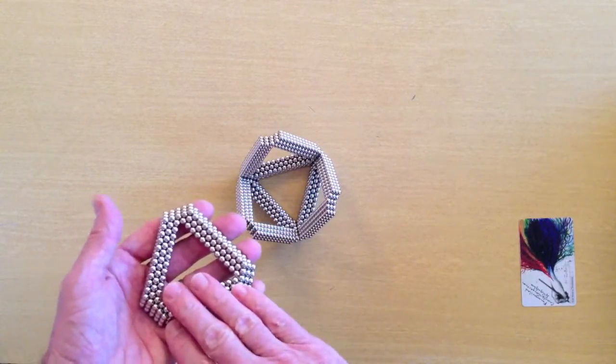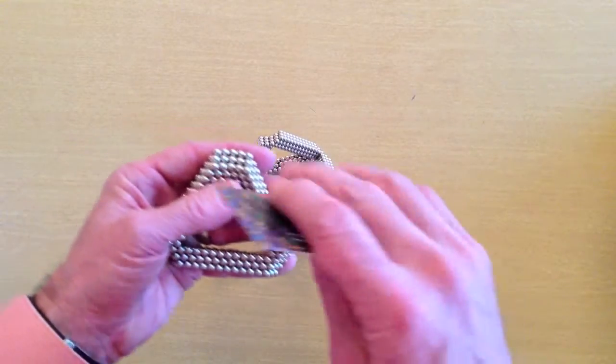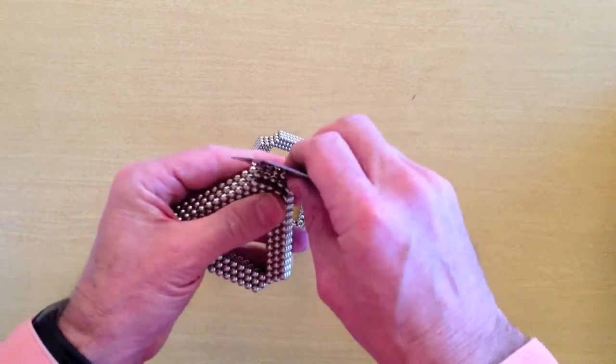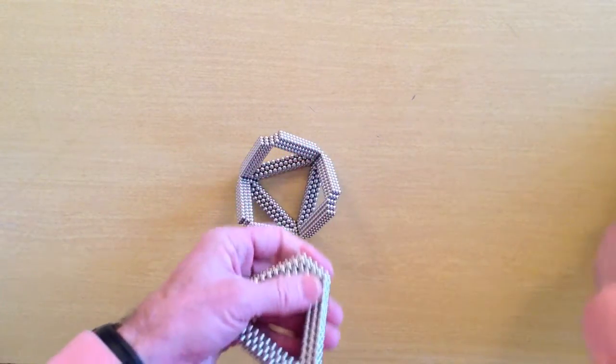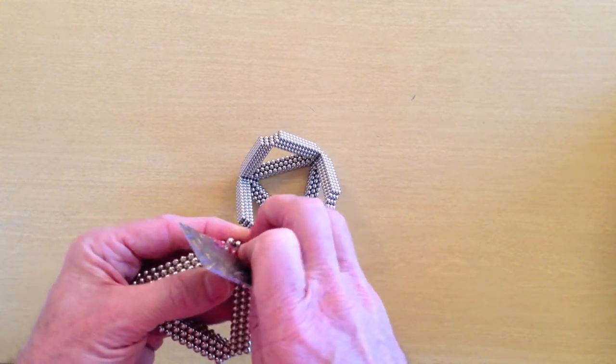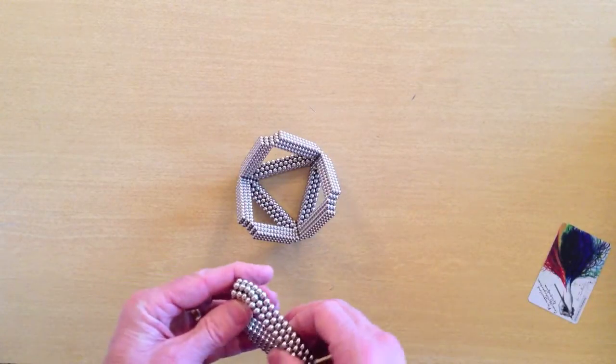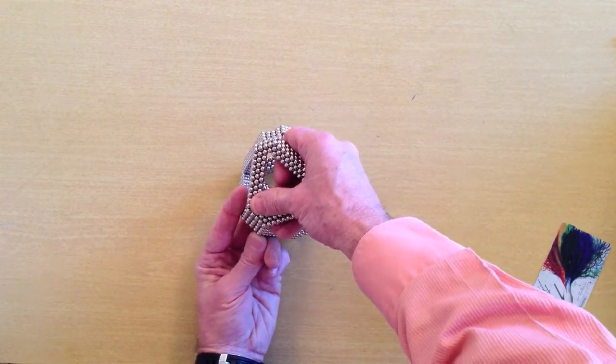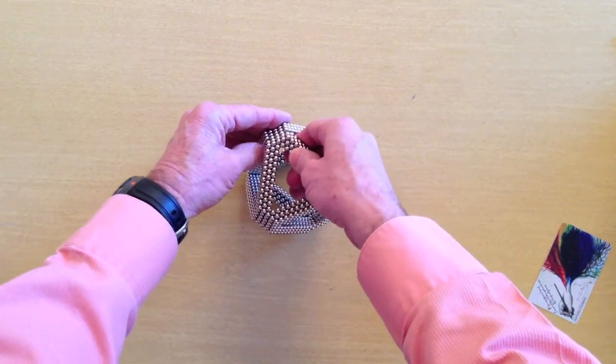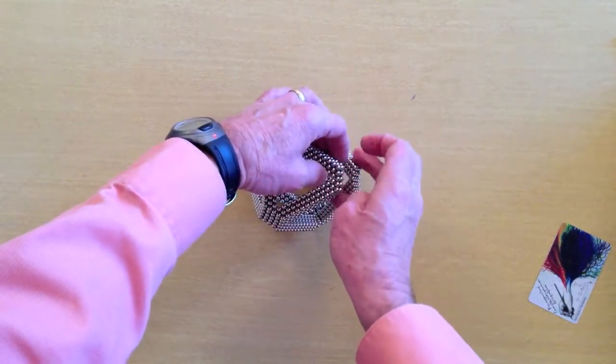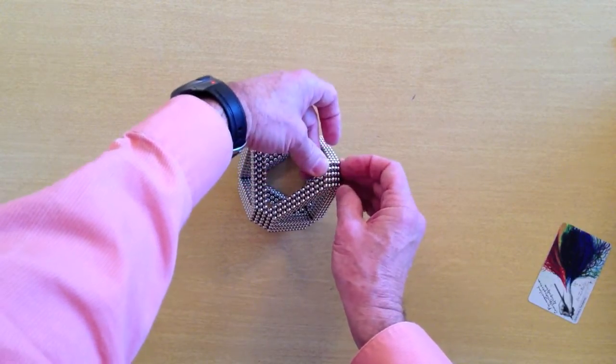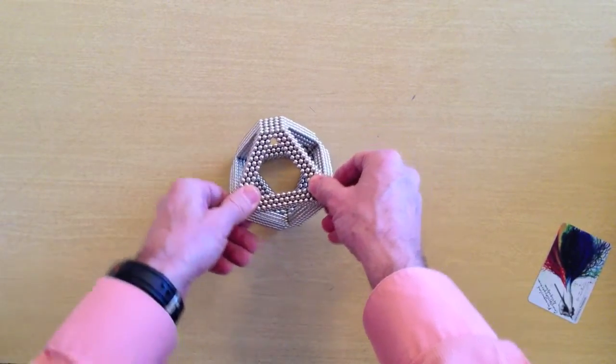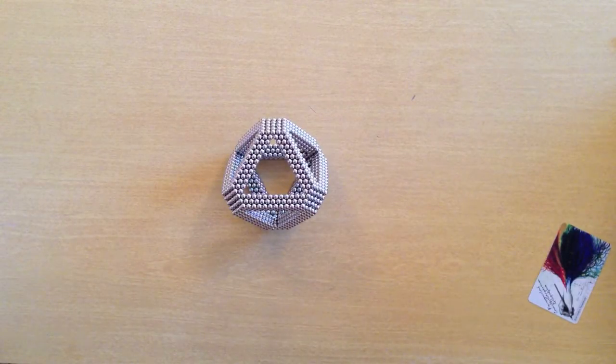Then finally, the top of the octahedron is going to be this piece. And we're going to have to remove the five magnets from each corner on this piece. And that's a basic octahedron shape.